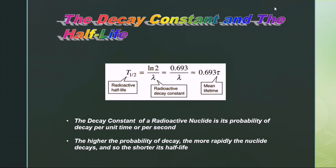Half-life and decay constant are related with the following equation: t½ = ln(2)/λ = 0.693/λ = 0.693τ, where τ = 1/λ and λ is the decay constant.